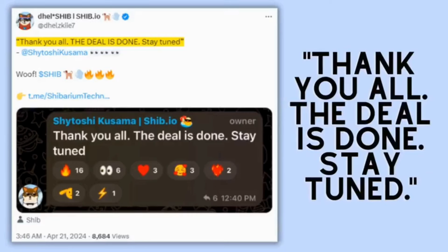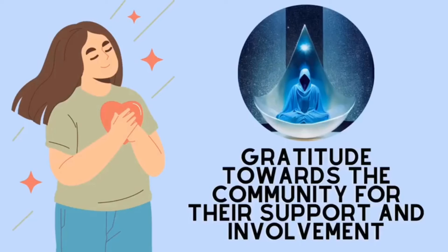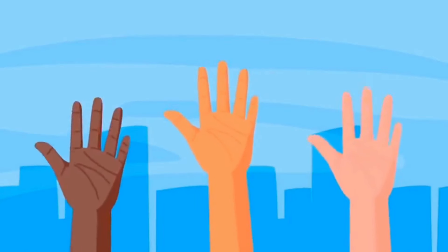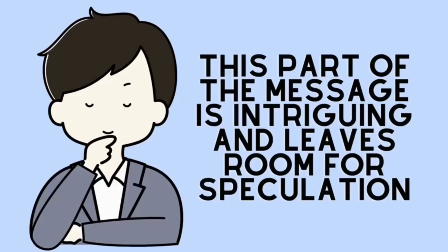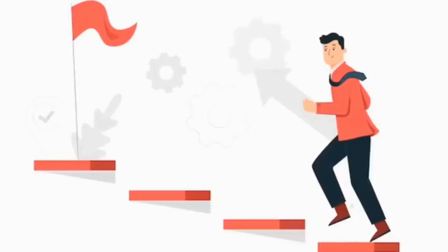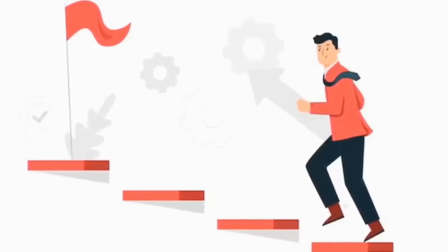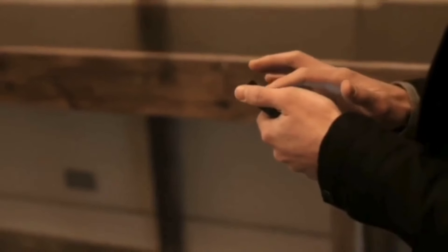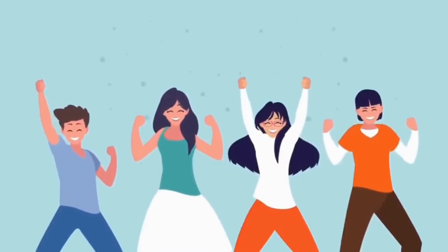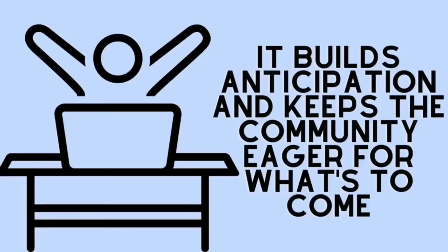The first message he left was: Thank you all. The deal is done. Stay tuned. First, this indicates gratitude towards the community for their support and involvement. It's a positive gesture that fosters a sense of unity and appreciation. However, what does 'the deal is done' part actually mean? This part of the message is intriguing and leaves room for speculation. It suggests that something significant has been accomplished or finalized. It could imply a partnership, acquisition, or major development within the Shiba Inu ecosystem. In the end of this message, Kusama encourages followers to remain engaged and attentive for further updates or announcements. It builds anticipation and keeps the community eager for what's to come.